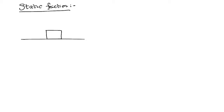If somebody applies some force F, the body is trying to move because of that applied force. Whenever there is a tendency for relative motion, friction comes into the picture in the opposite direction. This is the direction of the frictional force. If the body is in the state of rest, that frictional force is called static frictional force, which is directly proportional to the normal reaction.